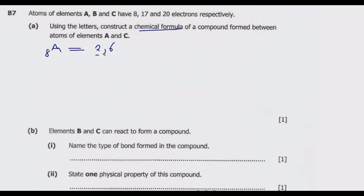Element B has 17 electrons: 2 in the inner shell, then 8 in the second shell — 2 plus 8 is 10, and 17 minus 10 gives us 7 electrons remaining in the last shell. So the electronic configuration of B is 2, 8, 7.